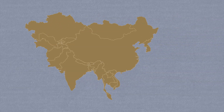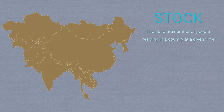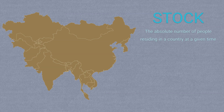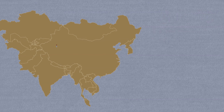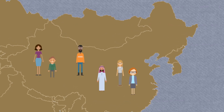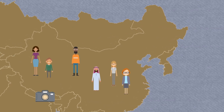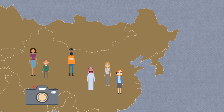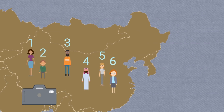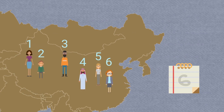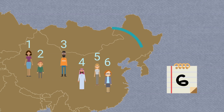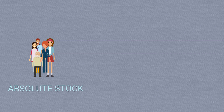Let's start with stocks. This term represents the absolute number of people in a country at a given time. So imagine if we pointed a camera at a country's population and took a snapshot — counting all the migrants in the photo would give us our migrant stock. Stocks can either be presented as a total count of migrants, or the percent of migrants compared to the domestic population.